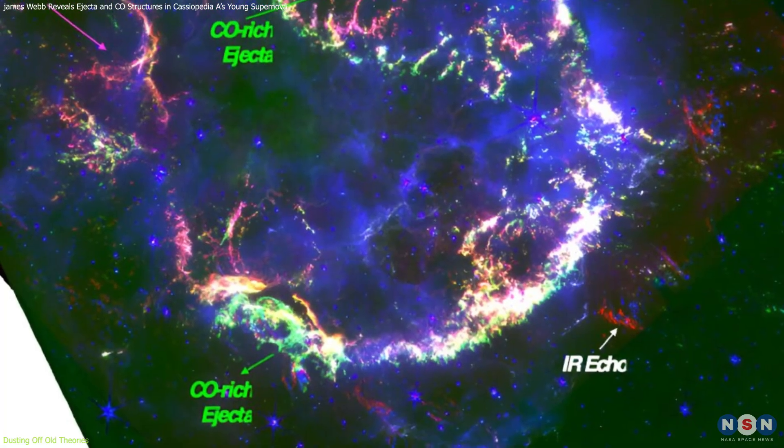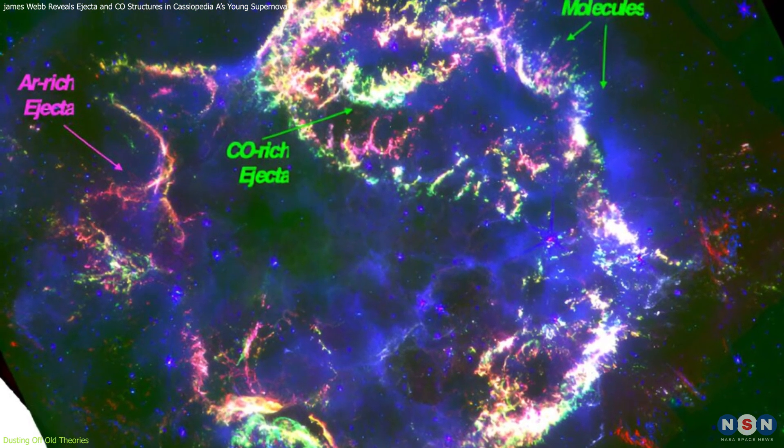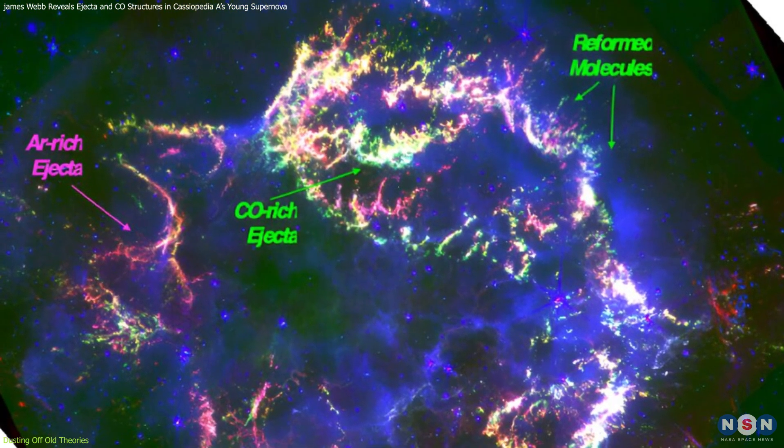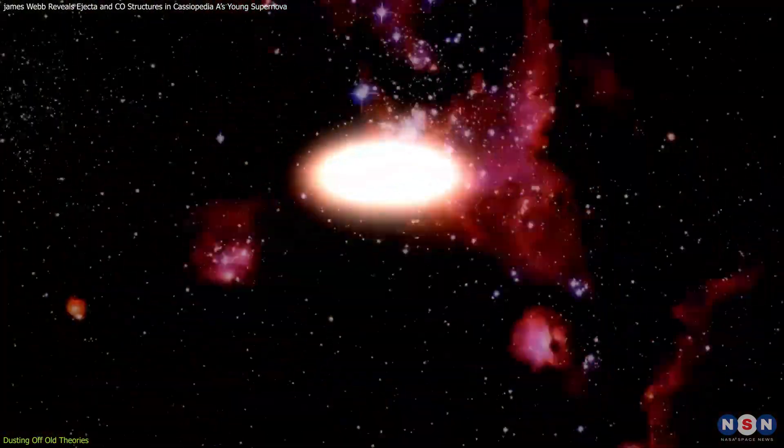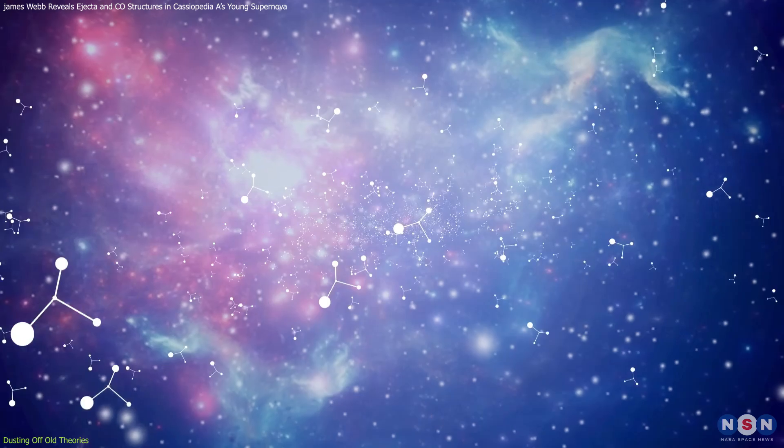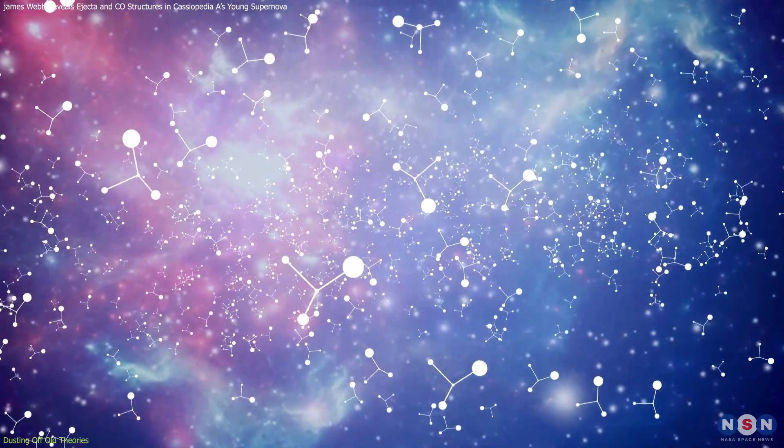Moreover, the insights gained from Cassiopeia A also shed light on the resilience of molecules like CO in extreme environments. The reformation of CO after the reverse shock suggests that molecules can survive, or even form, in the harsh conditions following a supernova.